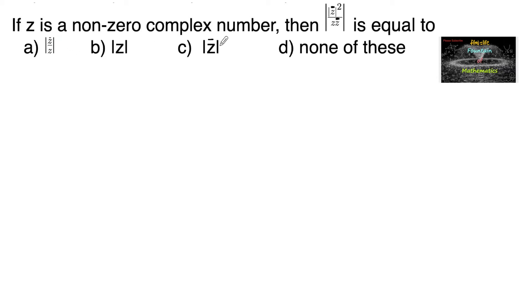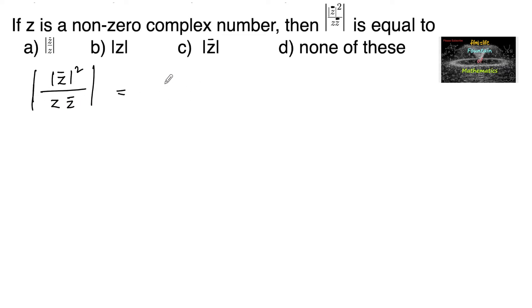If z is a nonzero complex number, then what is the modulus of |z̄|² upon z·z̄? We can write |z̄|² as |z̄| · |z̄| upon z·z̄.